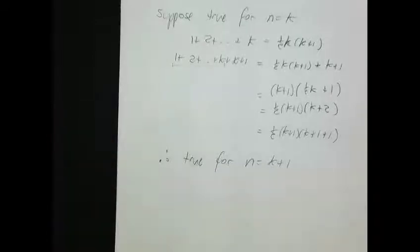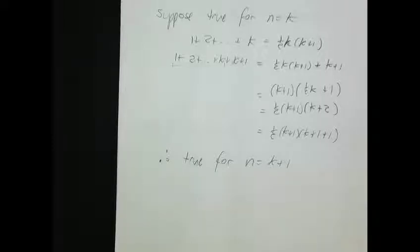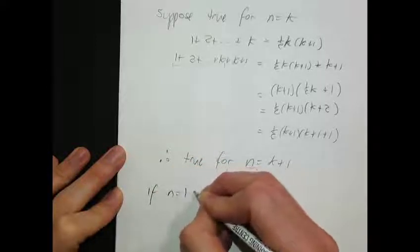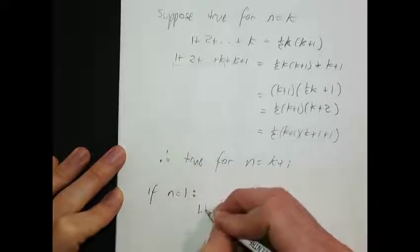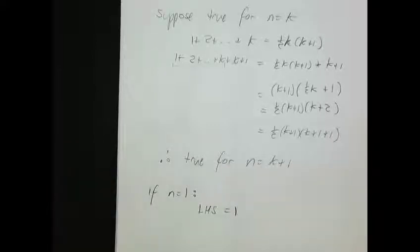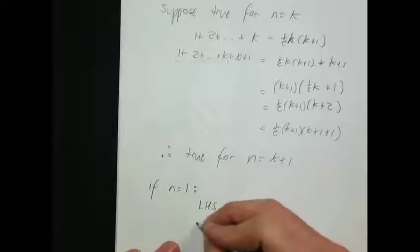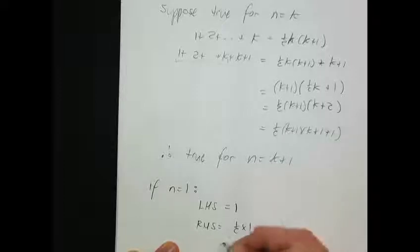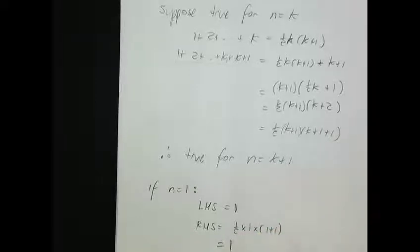We've set up our dominoes at the right distance apart and made our machine. All we need to do now is knock the first domino over—stick the first statement in the top. We need to be sure that N=1 is true. If N=1, the left-hand side is just 1, and the right-hand side is (1/2)(1)(1+1) = 1. They're equal, so therefore true for N=1.